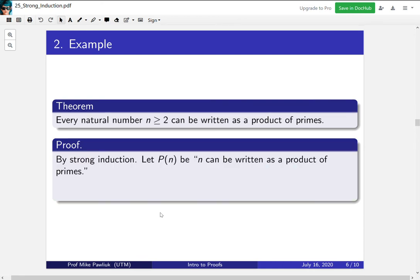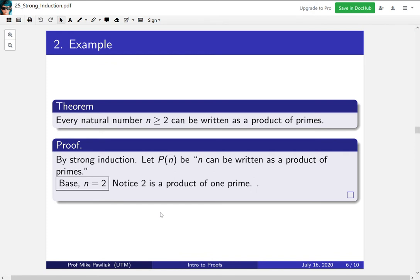So let's prove this by strong induction. Let P(n) be the statement, n can be written as a product of primes. The base case is n equals 2. Well, just like in the 7 case, 2 is already a product of primes, it's the product of 1 prime.